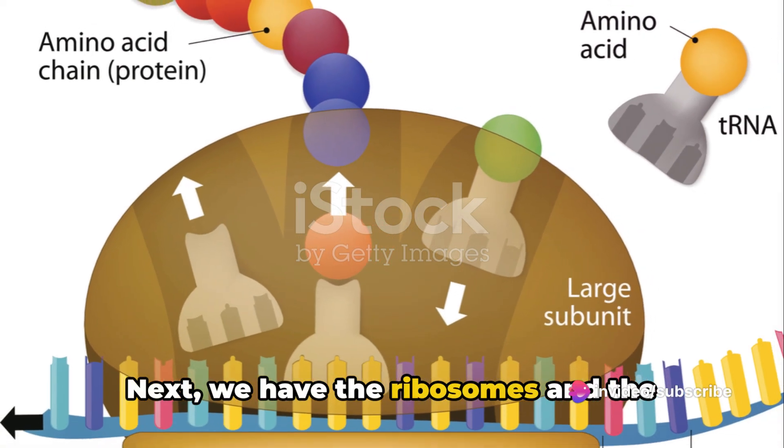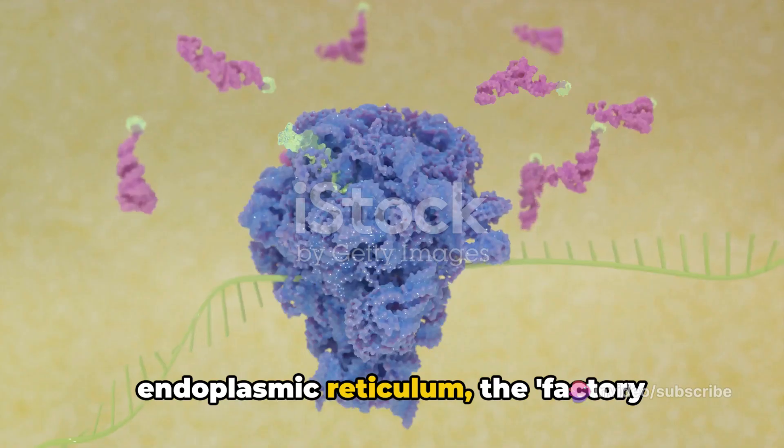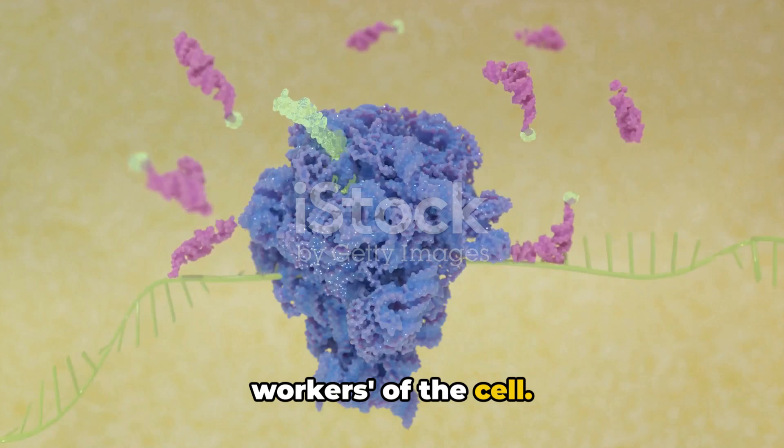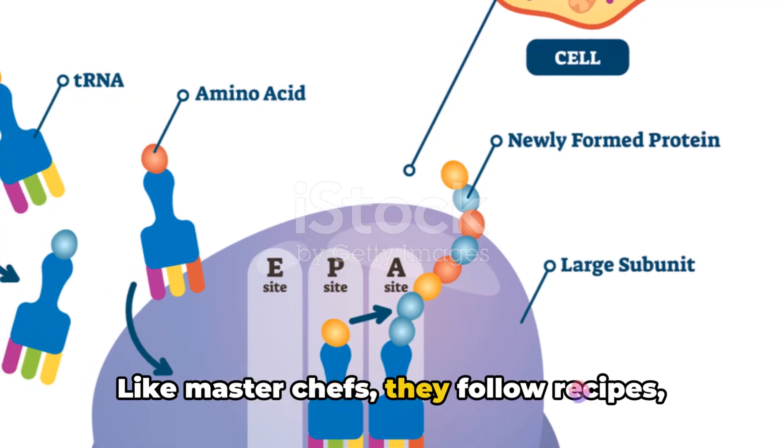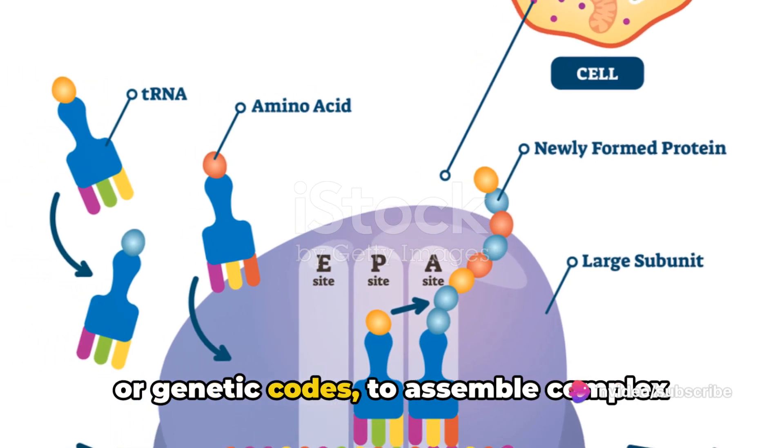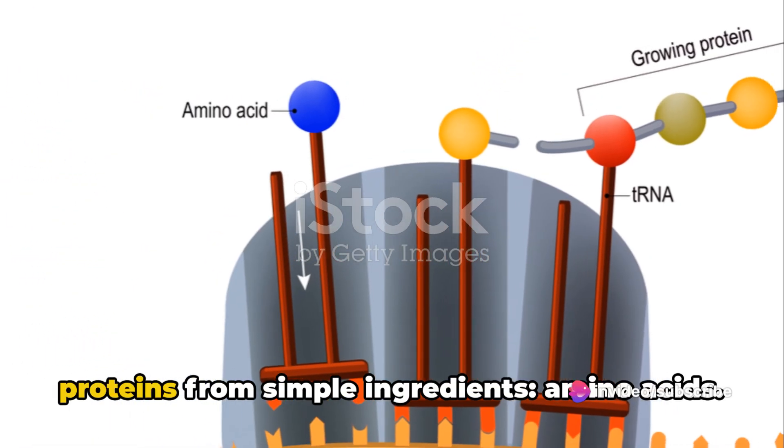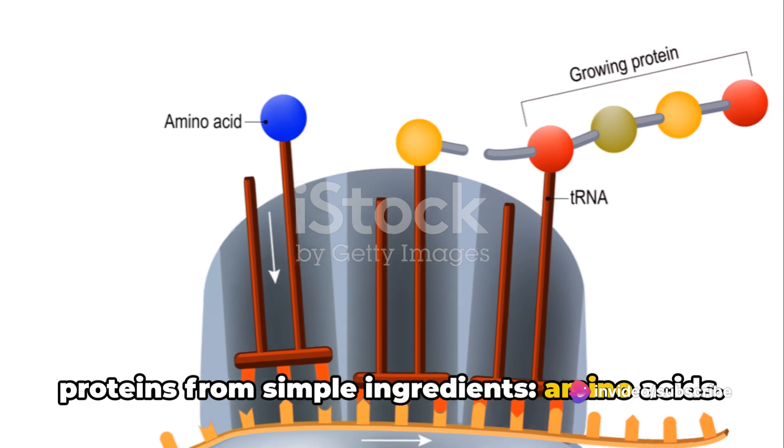Next, we have the ribosomes and the endoplasmic reticulum, the factory workers of the cell. Ribosomes are the protein builders of our body. Like master chefs, they follow recipes or genetic codes to assemble complex proteins from simple ingredients, amino acids.